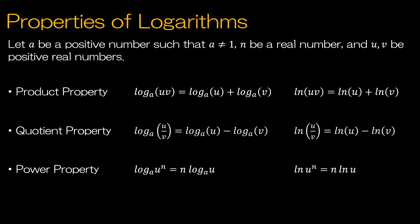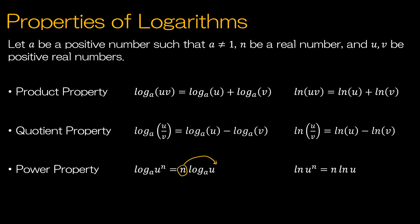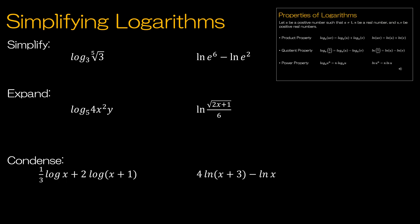The next property is the quotient property. Just as three to the fourth divided by three squared gives four minus two equals three squared, if I have the log of a quotient, I can take the logarithm of the numerator minus the logarithm of the denominator — for common log, natural log, and so forth. The last is the power property, which says if you have an exponent you can move it to the front, or if you have a value multiplied by a logarithm you can move it to an exponent.